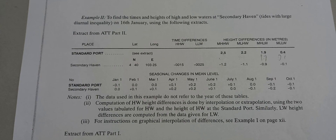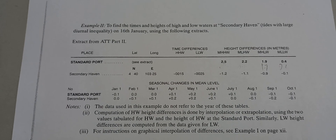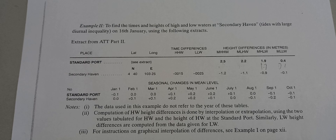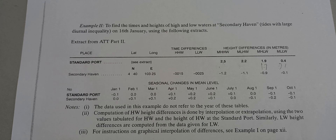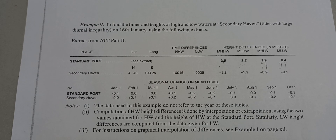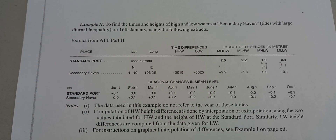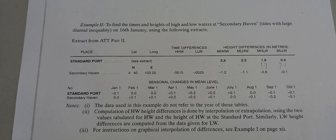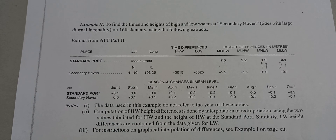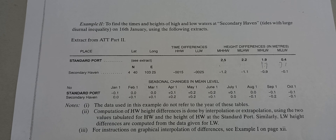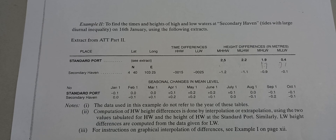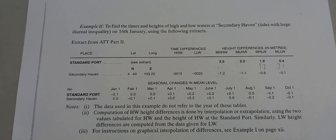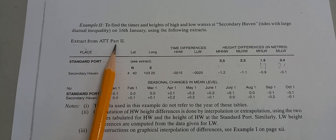We have another example on how to compute the times and heights of high and low water at a secondary port — this is tides with large diurnal inequality. This is dated January 16. Using the following extract, if you're going to compute for the actual secondary port, you need to go to the pages in the Admiralty Tide Tables, Part 2.